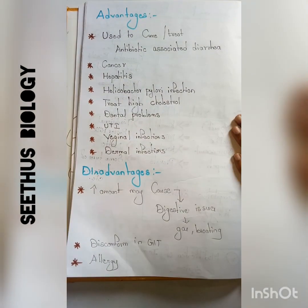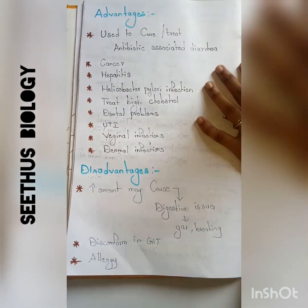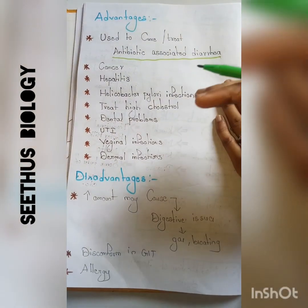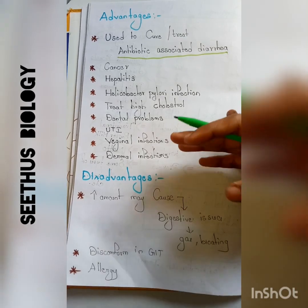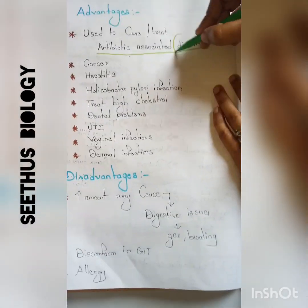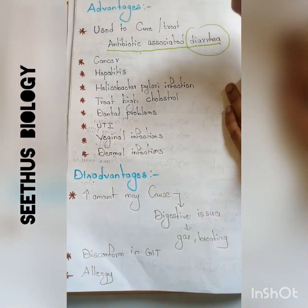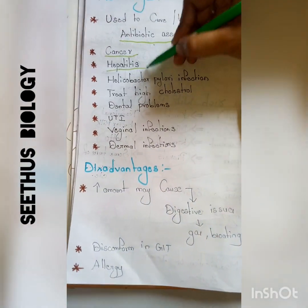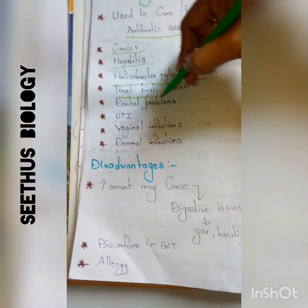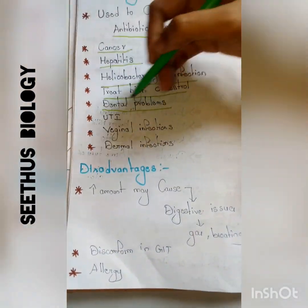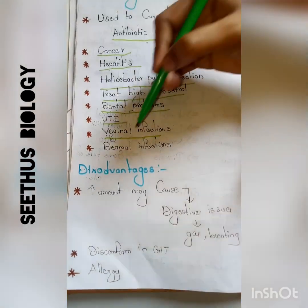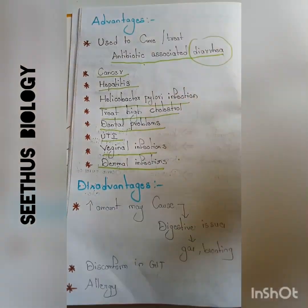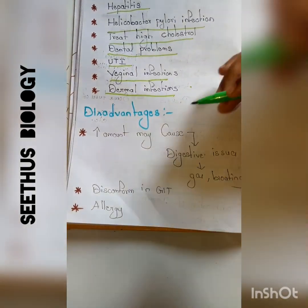The advantages of probiotics: they are used to treat antibiotic-associated diarrhea — when people take antibiotics for various reasons and develop diarrhea, probiotics play a major role in treating it. They are also used in cancer conditions, hepatitis patients, Helicobacter pylori infections, high cholesterol, dental problems, urinary tract infections, vaginal infections, and dermal (skin) infections.